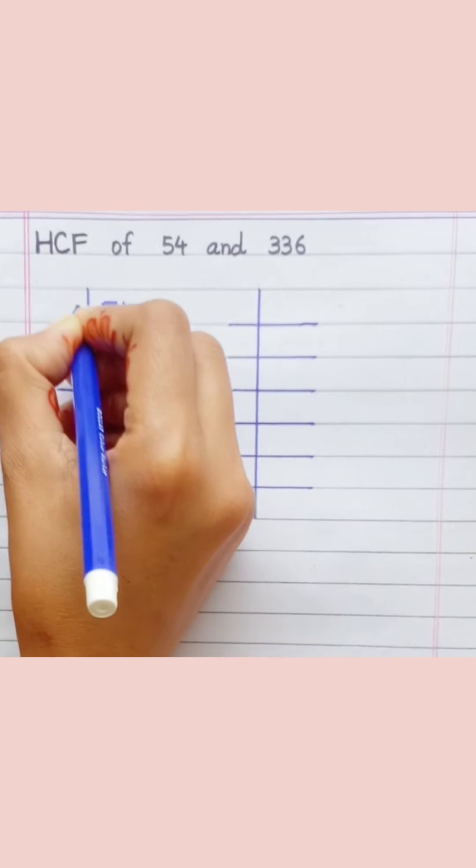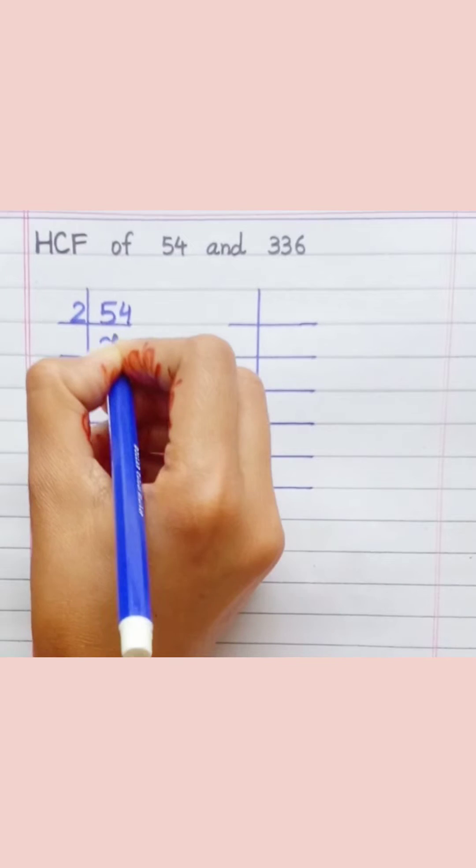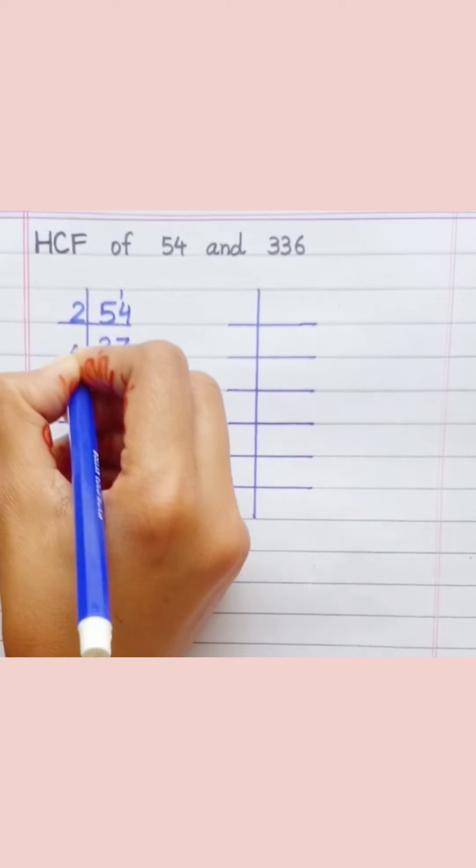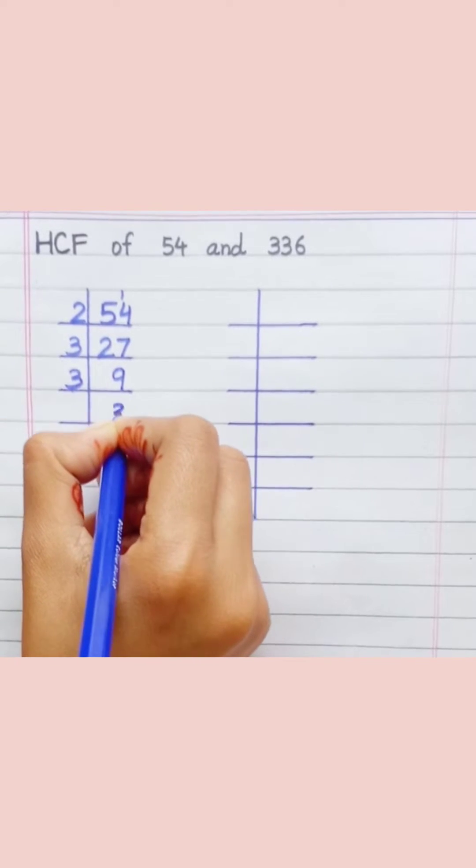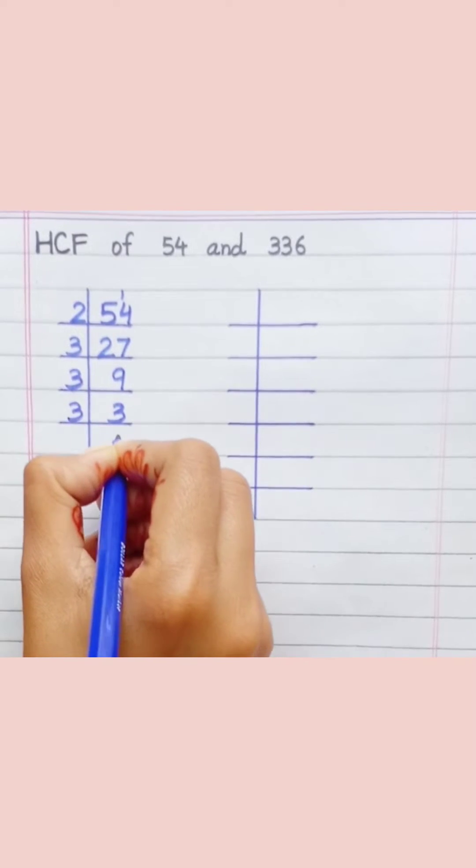54. 2 times 2 is 4. 2 times 7 is 14. 3 times 9 is 27. 3 times 3 is 9. 3 times 1 is 3.